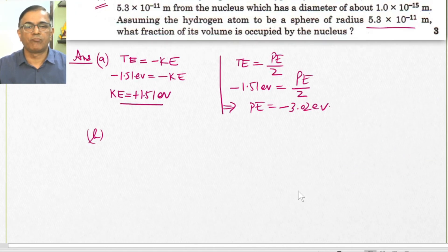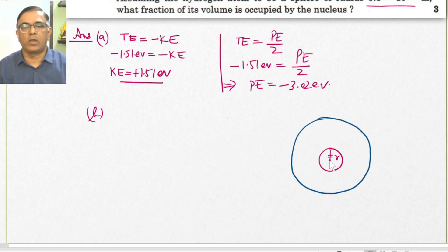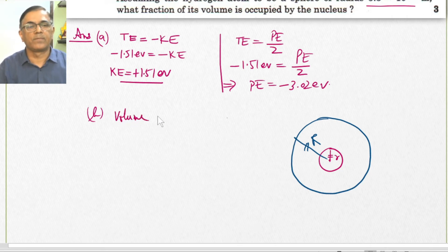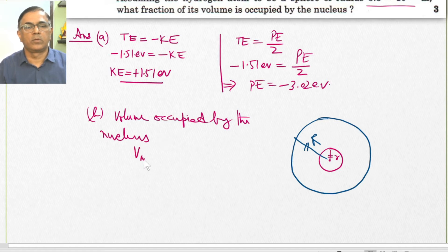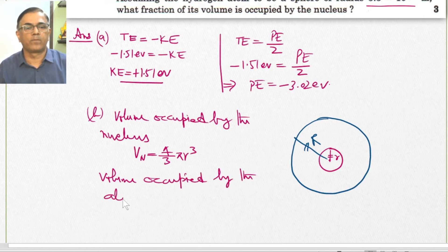Here we have a nucleus of radius small r, and the electron orbits around it at radius capital R. The nucleus is spherical, so the volume occupied by the nucleus is (4/3)π r³. The atom is also spherical, so the volume occupied by the atom is (4/3)π R³.